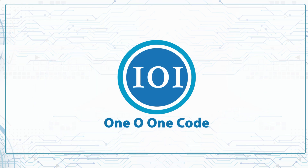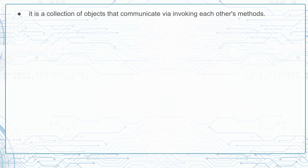Without any further ado, let's get started. If we want to talk about a general definition for a Java language, we can say it's a collection of objects that communicate via invoking each other's methods. Let's see some of that in action.